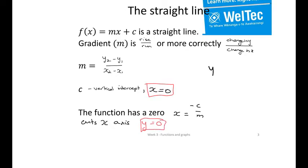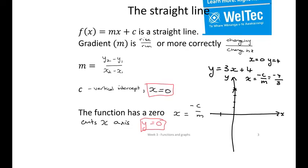If we've got an example like y equals 3x plus 4, drawing your axis, when x is equal to zero, y is equal to 4. So it's going to cut the y-axis. The zero is at x equals negative c over m, which is negative 4 over 3. Because it's a rule we can join it up like that.